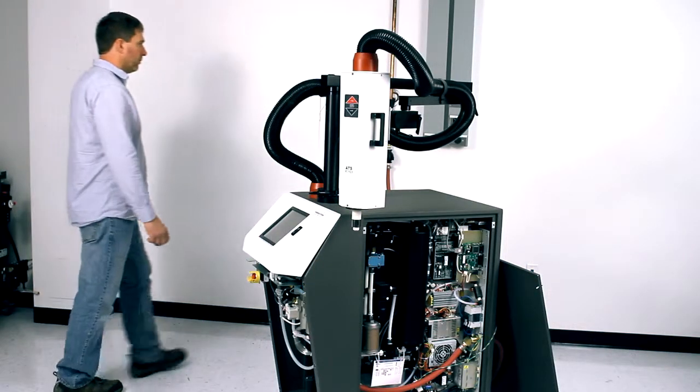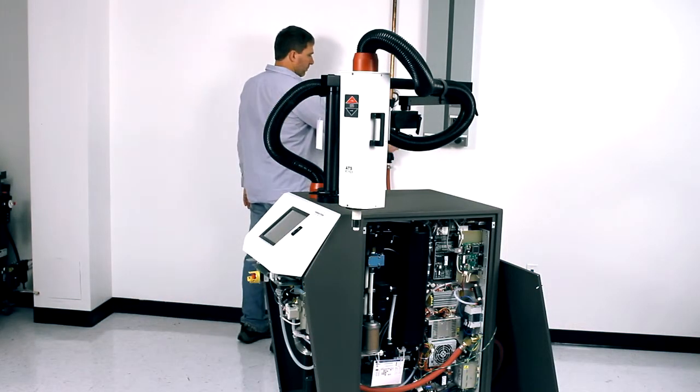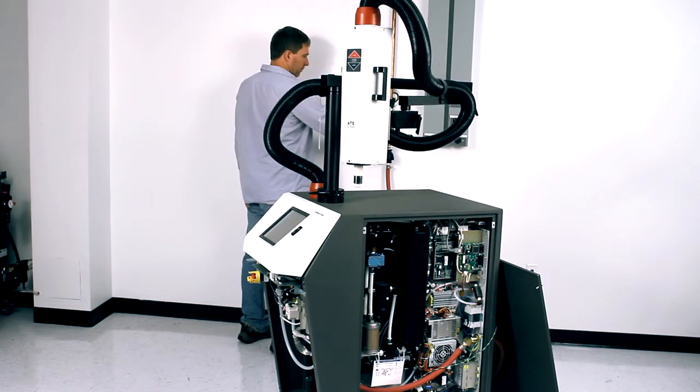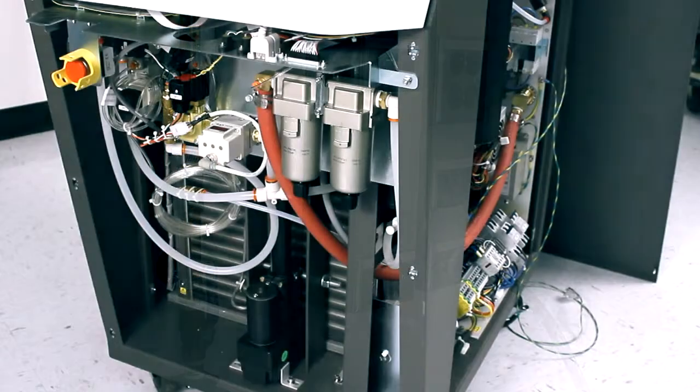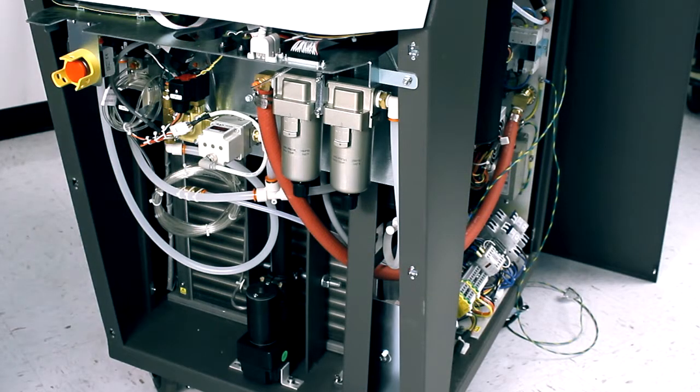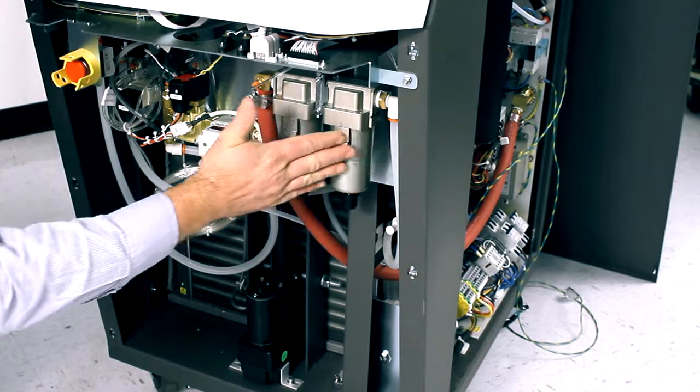Before replacing the side panels, we're going to re-energize the system with compressed air and power. Now, check for air leaks around the base of the filter housing and drain.